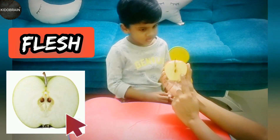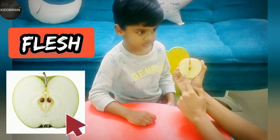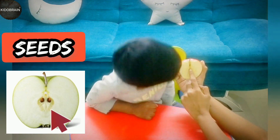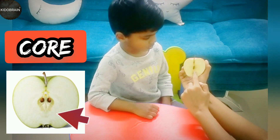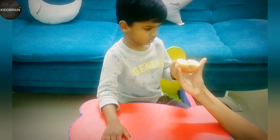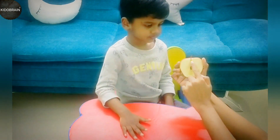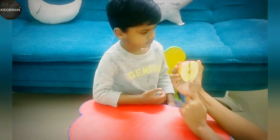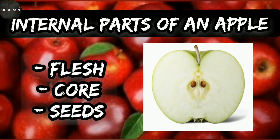What is this in the middle that's in the yellow? Flesh. Flesh, right. And what's in the middle? Seeds. Very good. And what is this part called around the seeds? Core. That's the core of an apple. And what do you see down? Calyx. And can you see the stem? Yes. So now you know internal parts of an apple as well. Internal parts of an apple are flesh, core, and seeds.